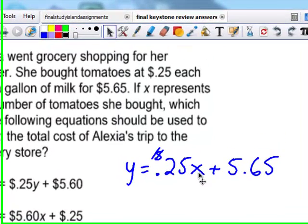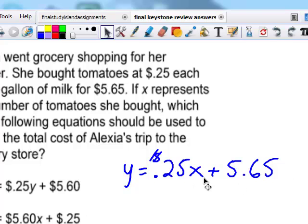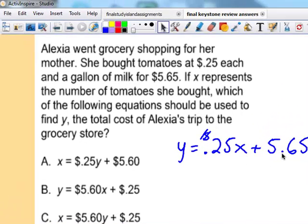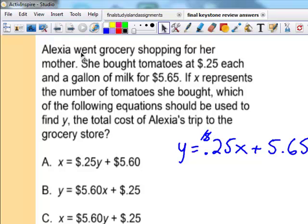If you buy 10 tomatoes, they're going to be 25 cents each plus your milk. So X stands for number of tomatoes. It should be a real simple choice to pick D - 25 cents per tomato plus the cost of a gallon of milk. That's expensive milk.